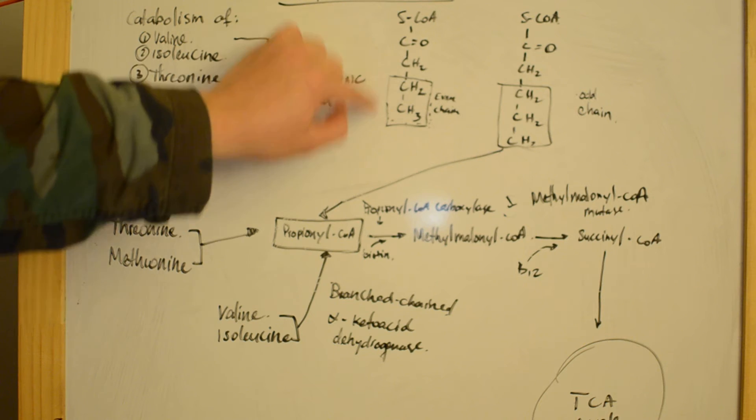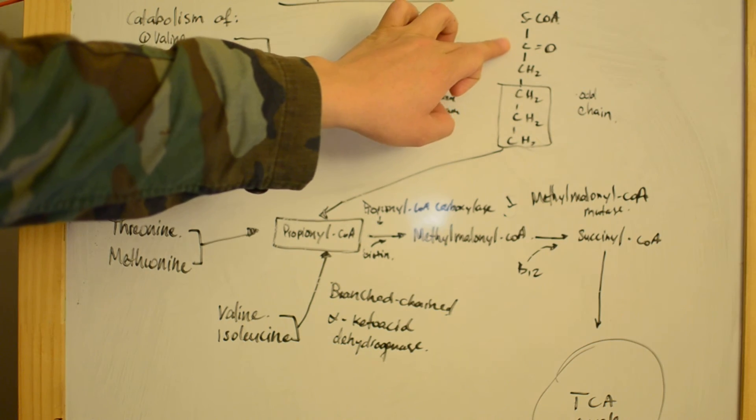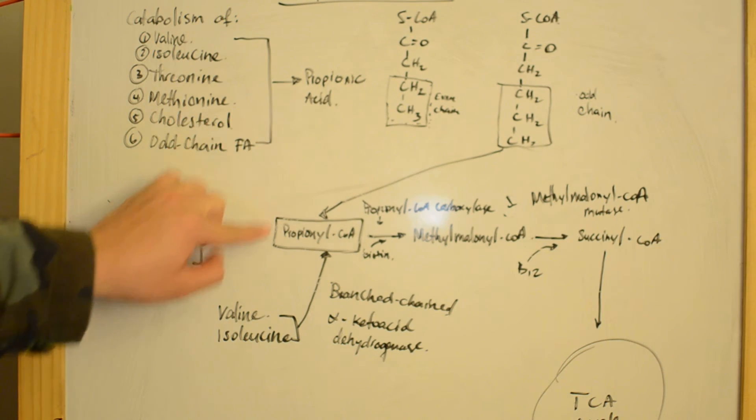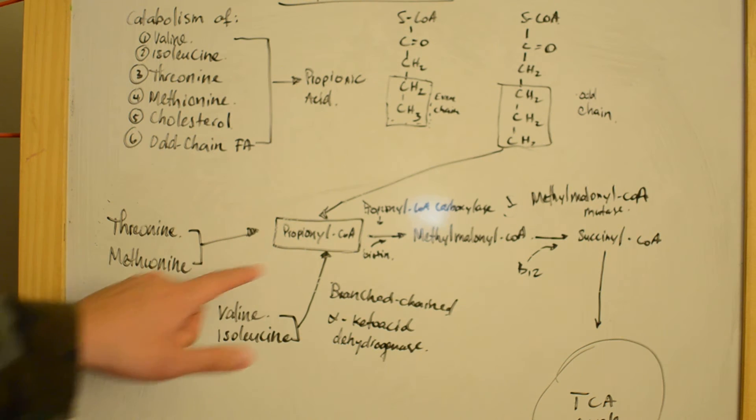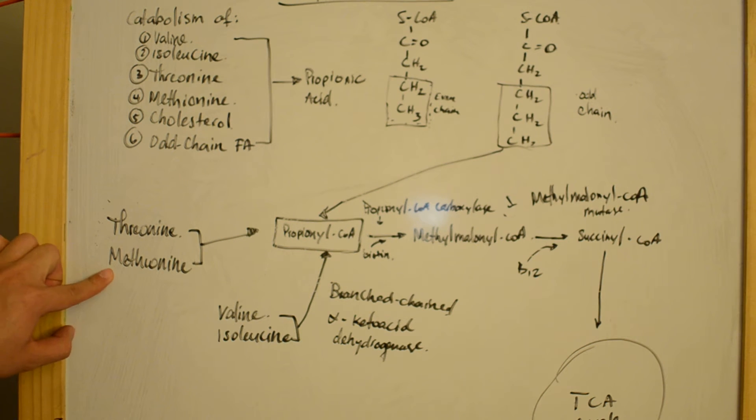As you can see right here, odd-chain fatty acids are catabolized into propionyl-CoA, as well as threonine and methionine, which are catabolized into propionyl-CoA.